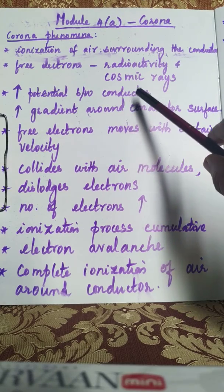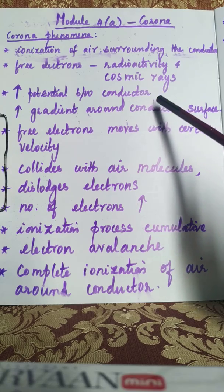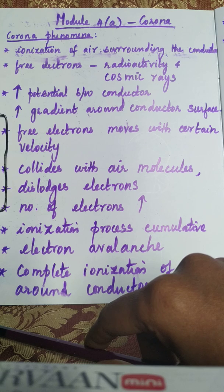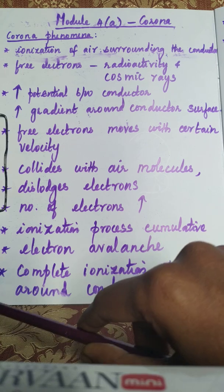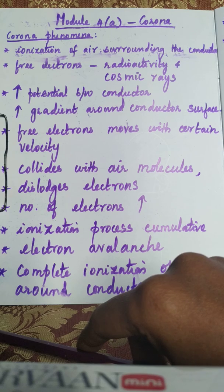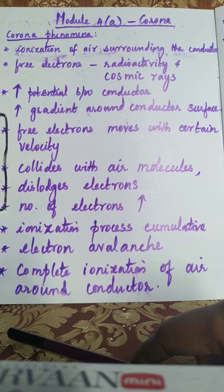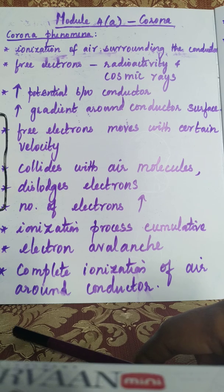When you apply a potential between conductors — consider a current-carrying conductor carrying an AC voltage — because of this potential there will be a potential gradient around the conductor surface. At the surface of the conductor the gradient will be maximum, since the potential gradient is the ratio of voltage and distance, and at the conductor surface the distance is less, so the potential gradient will be more.